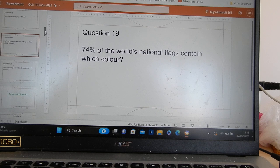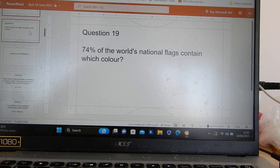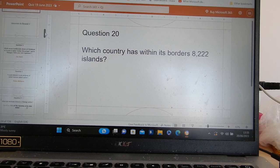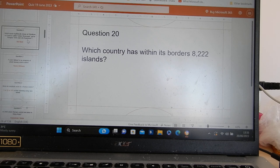74% of the world's national flags contain which colour? But be careful, 71% contain a different colour. Which country has within its borders 8,222 islands? The answers?